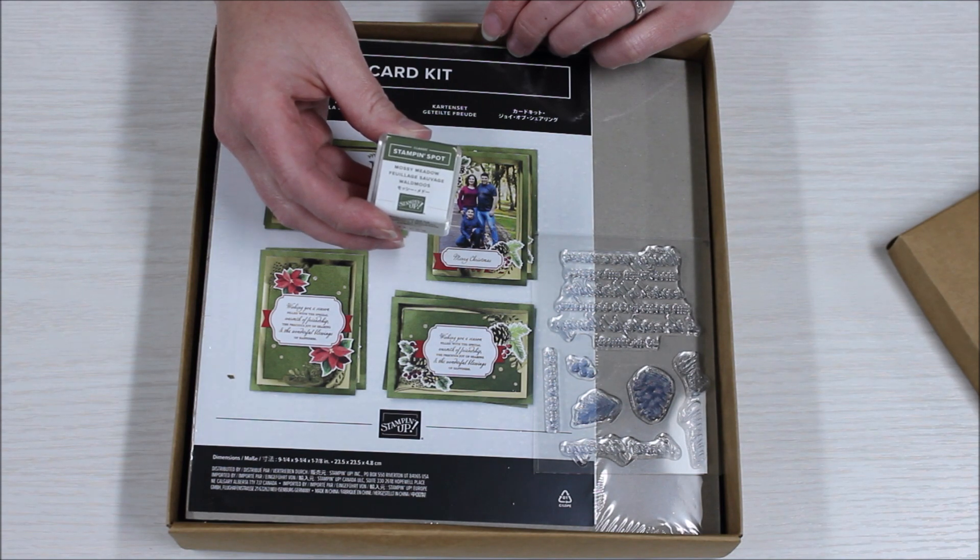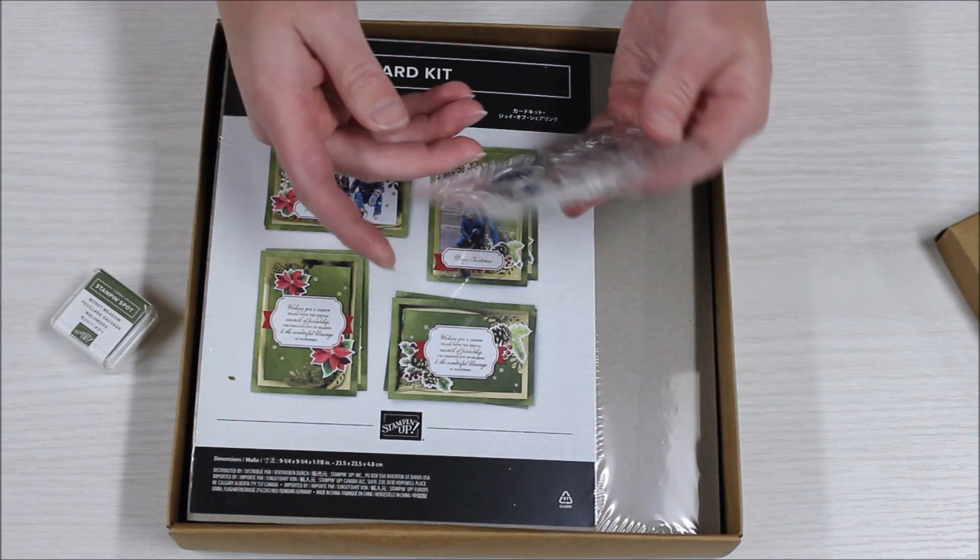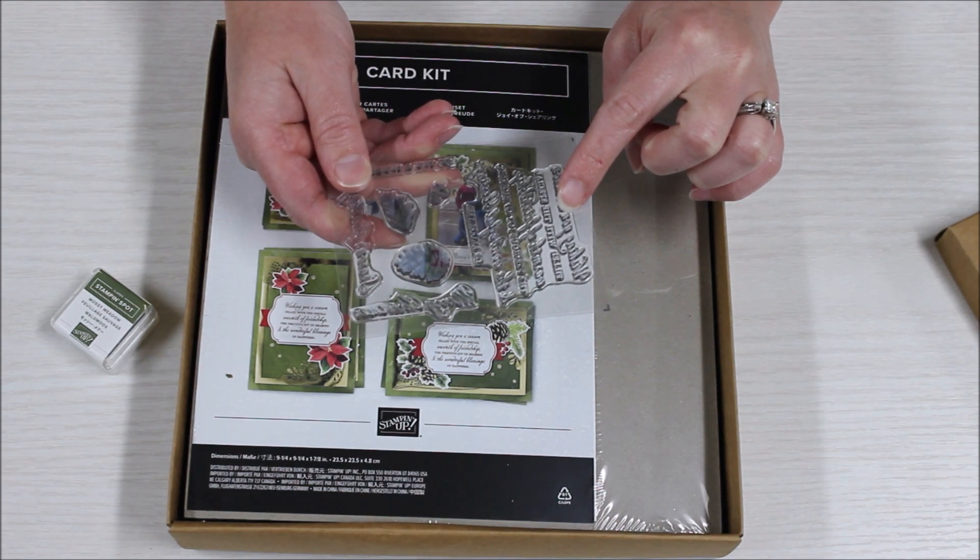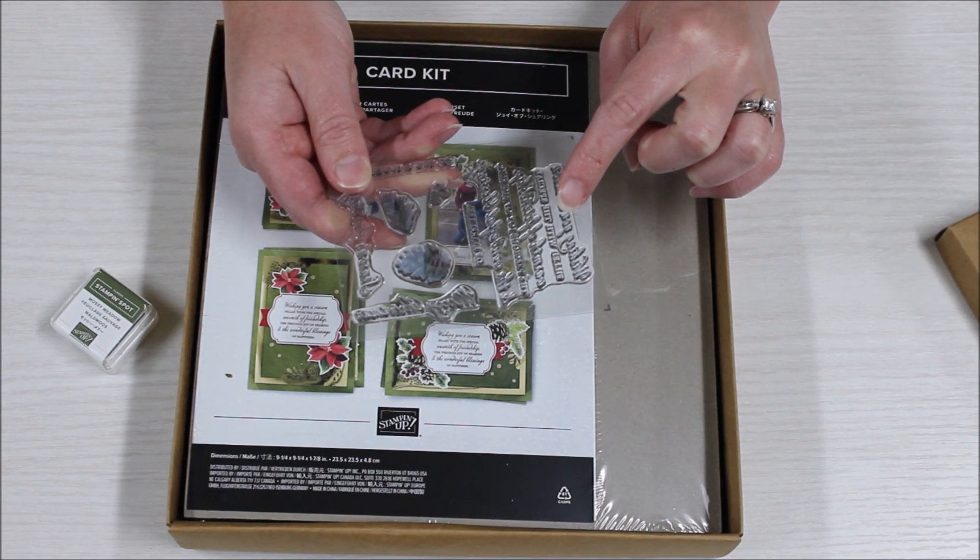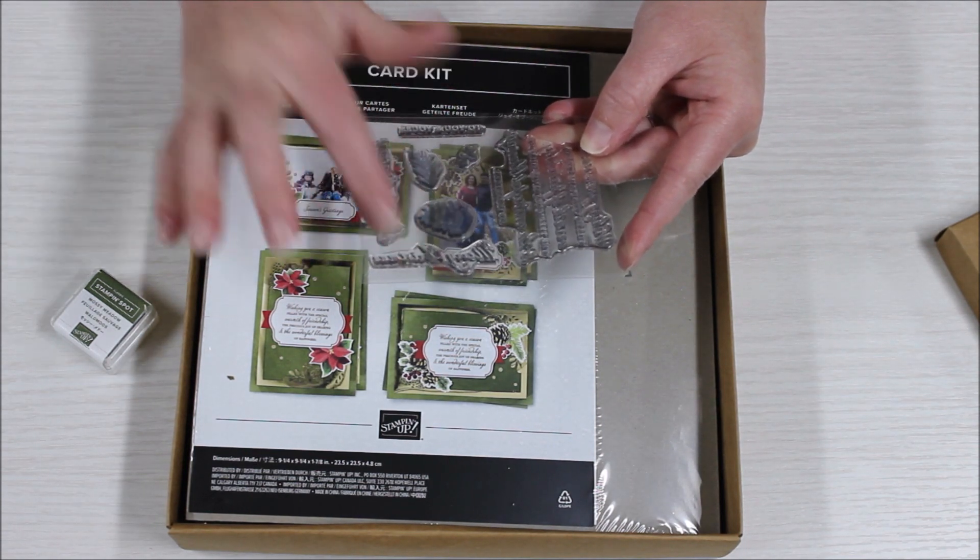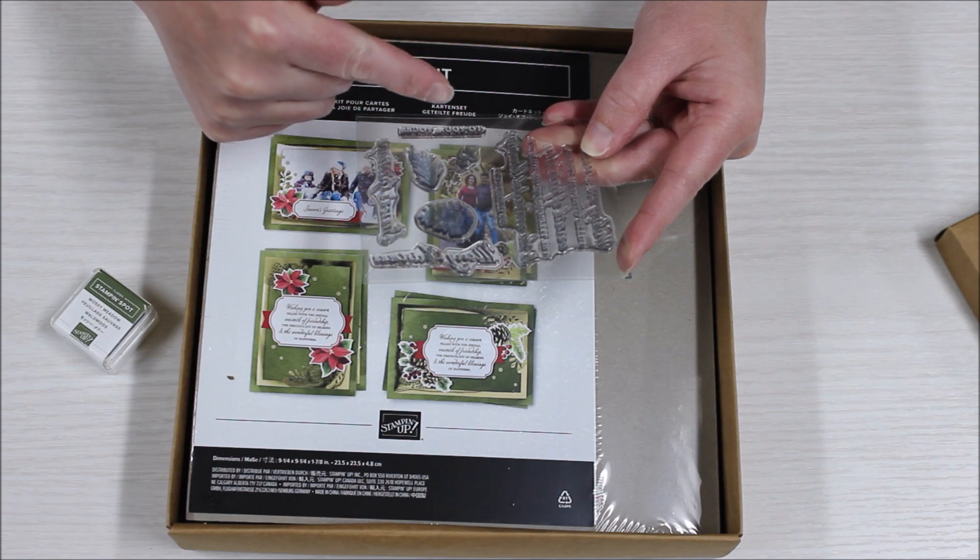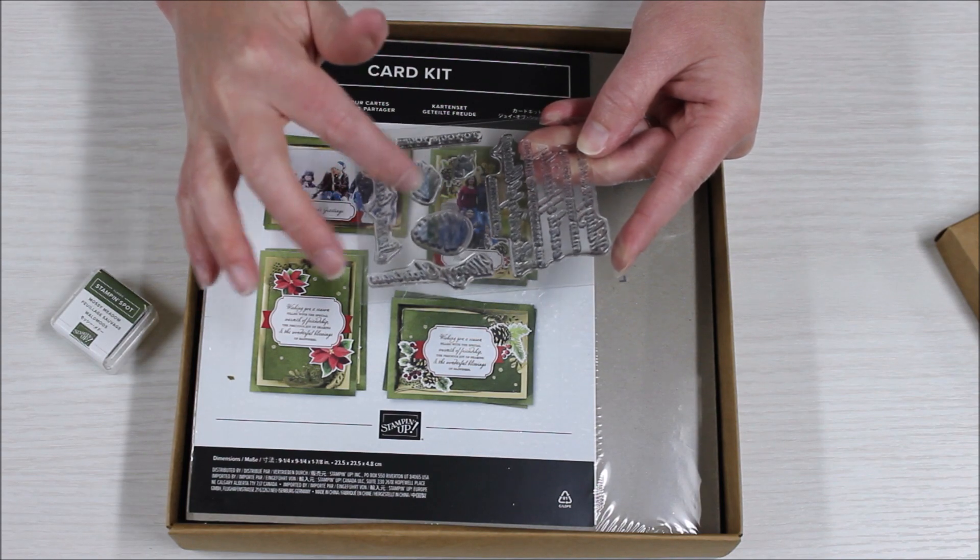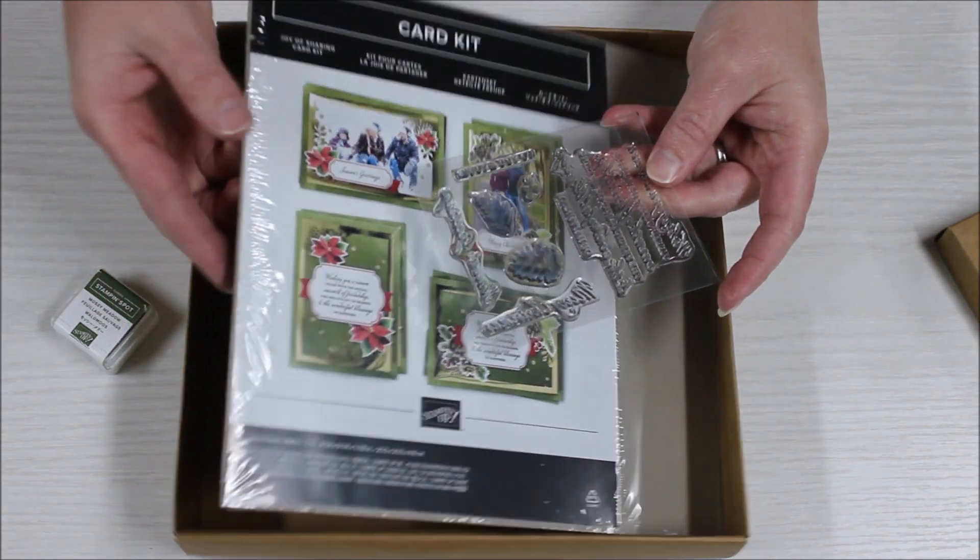The ink spot included is Mossy Meadow, so you'll have that nice dark green color. The stamps include a large greeting that says 'Wishing you a season filled with the special warmth of friendship, the precious joy of sharing, and the wonderful blessings of happiness.' There are also smaller greetings that say 'Merry Christmas,' 'To You and Yours,' and 'Season's Greetings.' There are also pine cone, holly, and leaf images that you can use to decorate the envelopes, insides, or front piece.